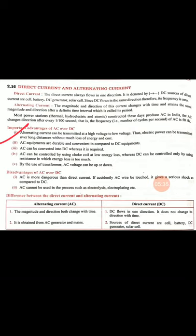The second advantage is that AC equipment is more durable and convenient compared to DC equipment. We use many appliances such as a washing machine, TV, fridge, fan, AC, and cooler — all of these are AC appliances. AC equipment and appliances are more durable and convenient.